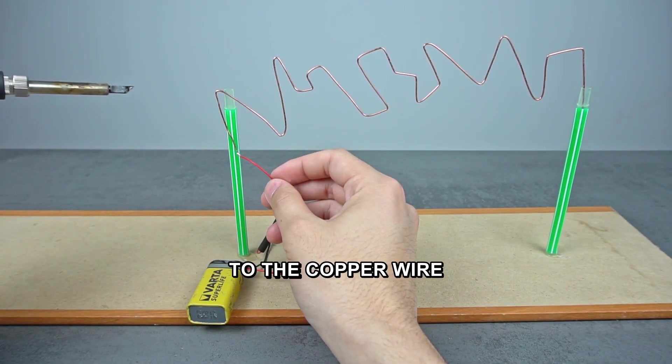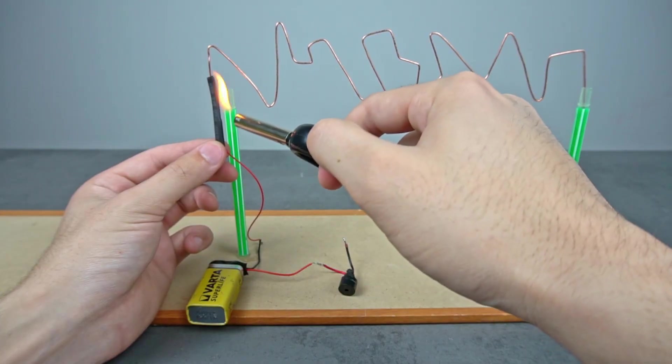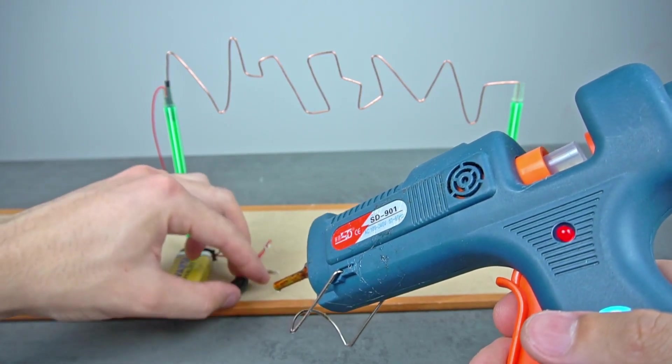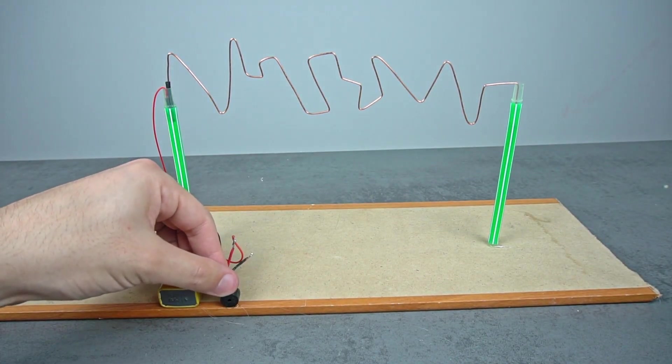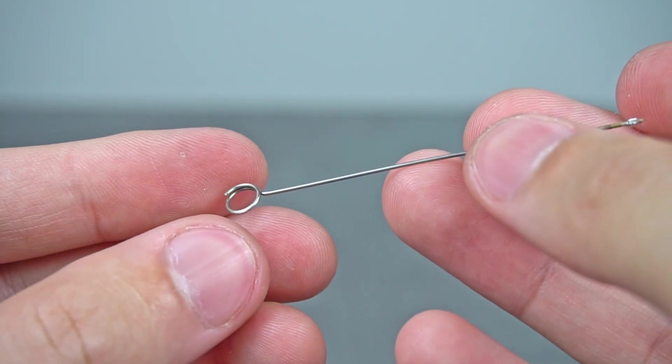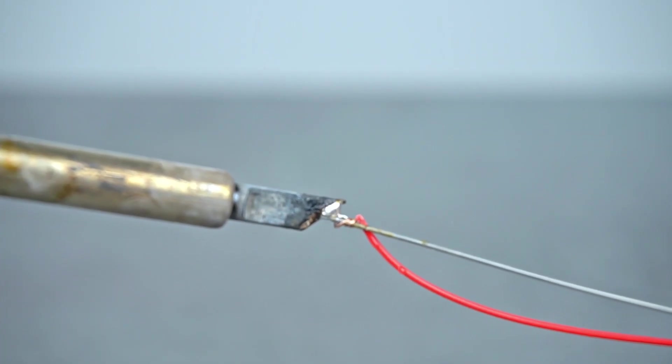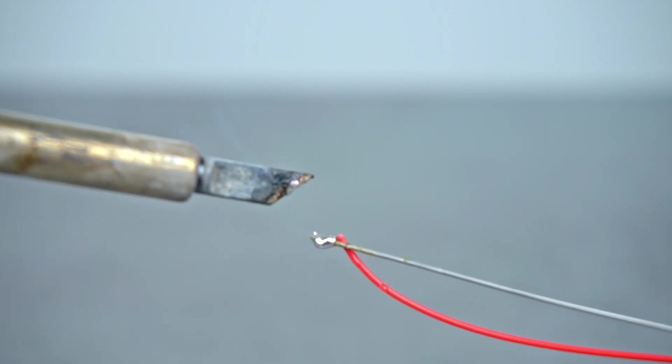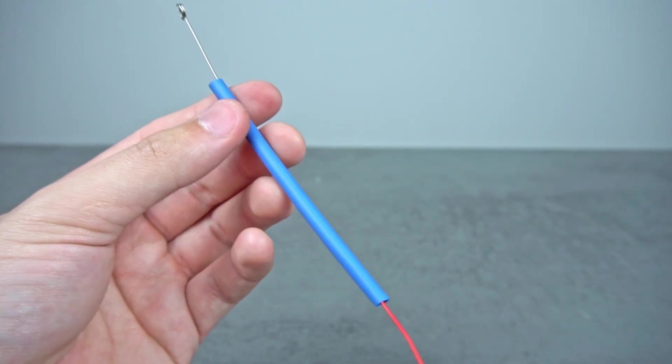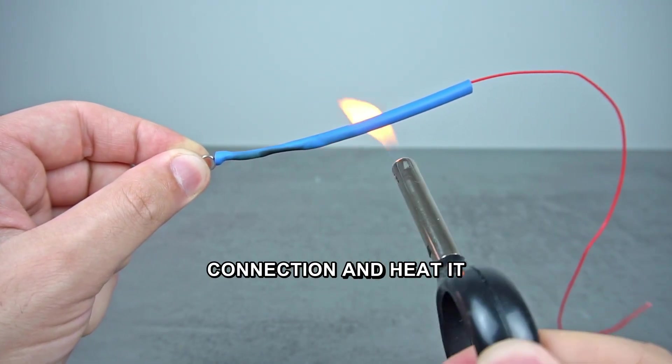Solder one wire from the battery to the copper wire. Solder a wire to it. Put heat shrink tubing on the connection and heat it.